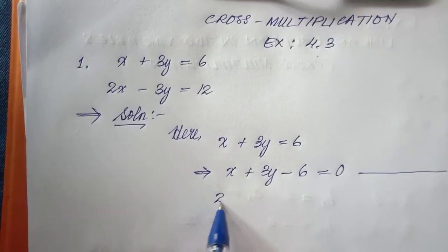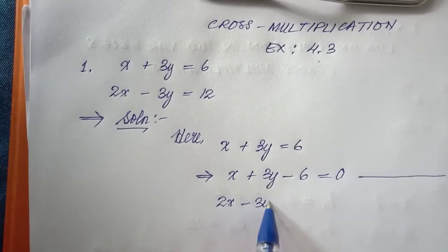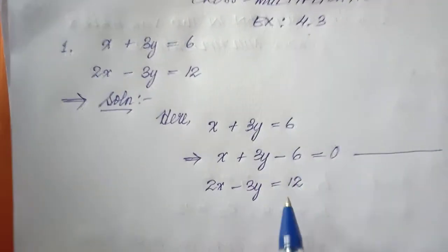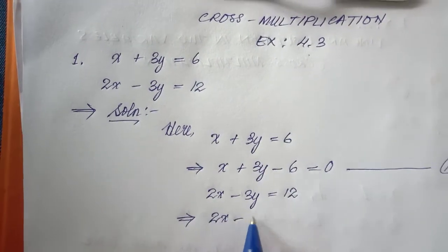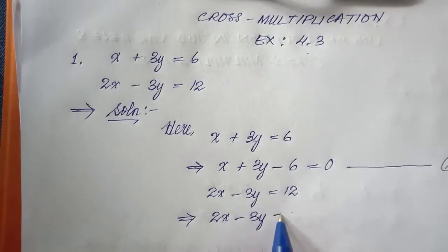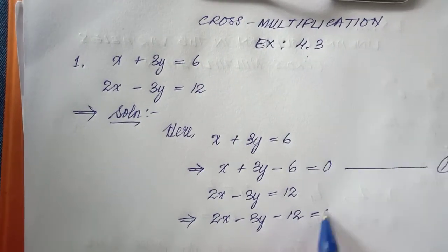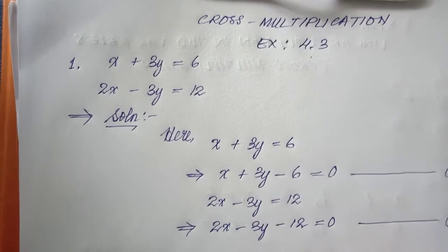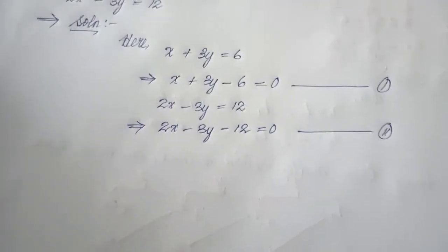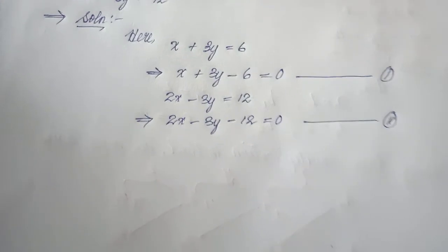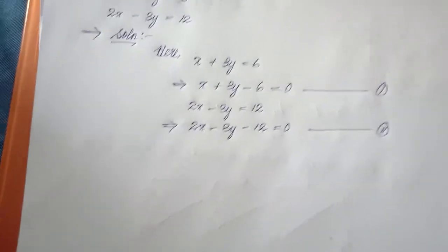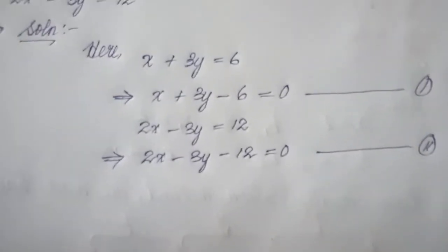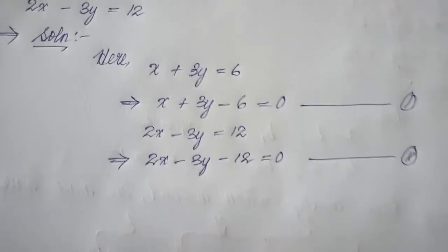The second equation is 2x minus 3y equals 12. Likewise, 12 is on the right hand side, so we move it: 2x minus 3y minus 12 equals zero — this is equation two. Both constant terms change their sign. This is very important — if you don't make this change, you will always get the wrong answer.